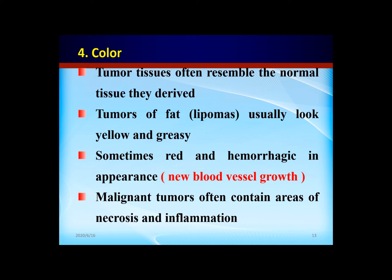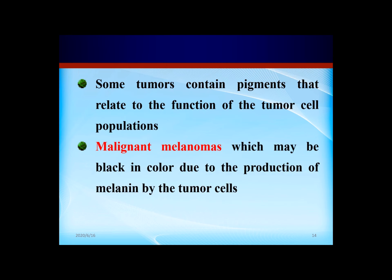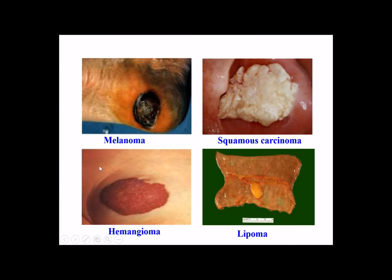Malignant tumors often contain areas of necrosis and inflammation, so the color may be gray or yellow. Some tumors contain pigments. For example, melanoma — this malignant tumor can release melanin, so the color is black.